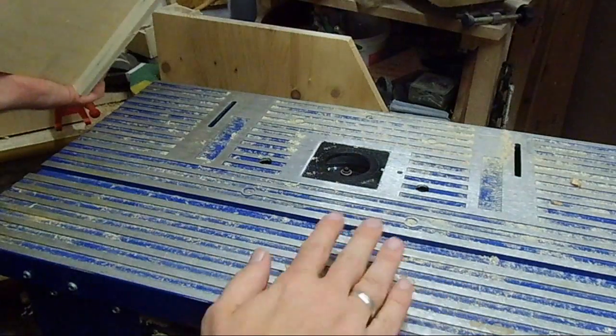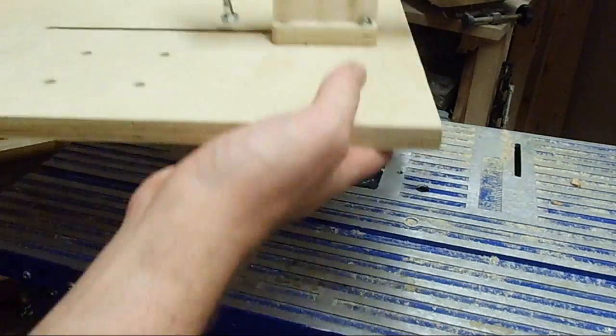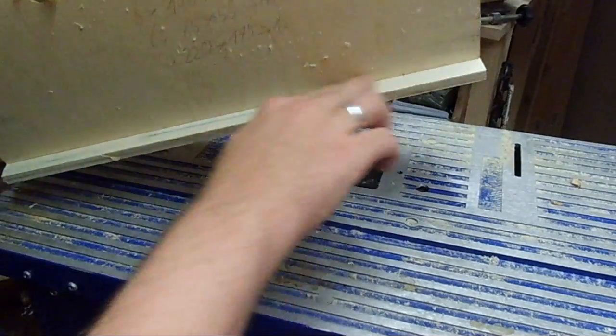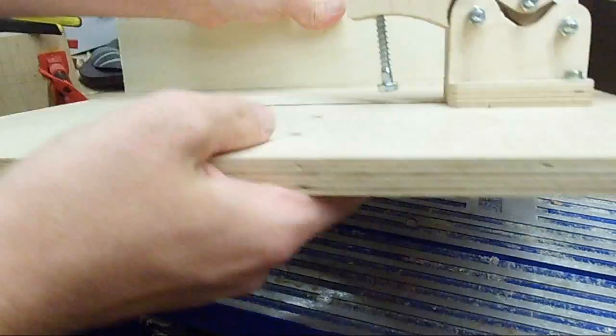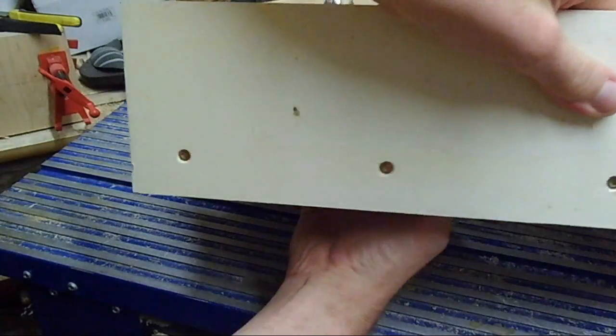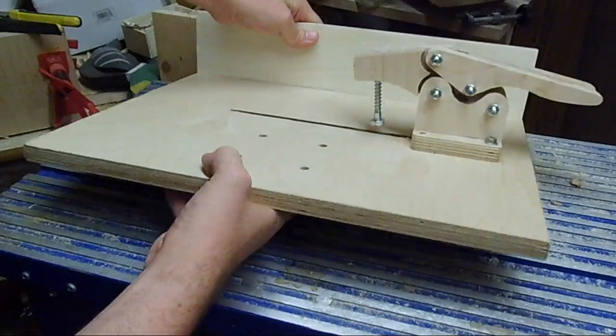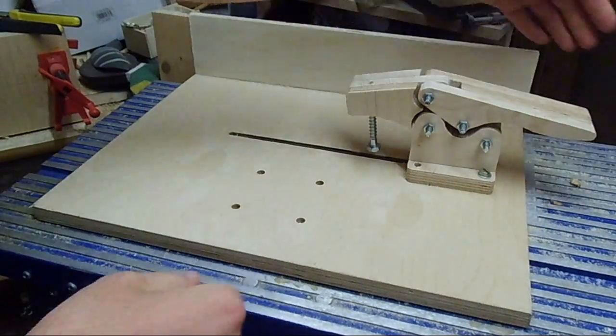So here's my sled on my router table. It's not the most expensive one, and your mileage and measurements may vary, but I have this board on the back just screwed to the base and it rides against the back of the table.